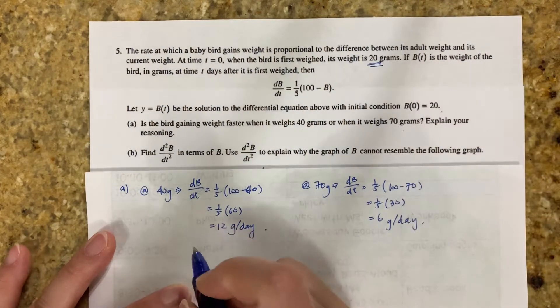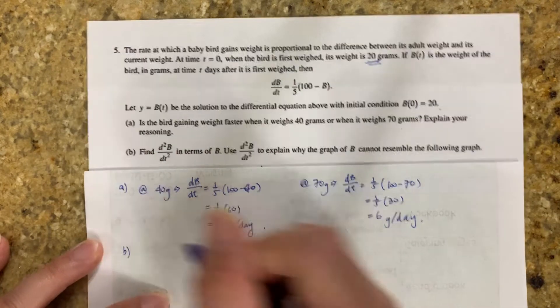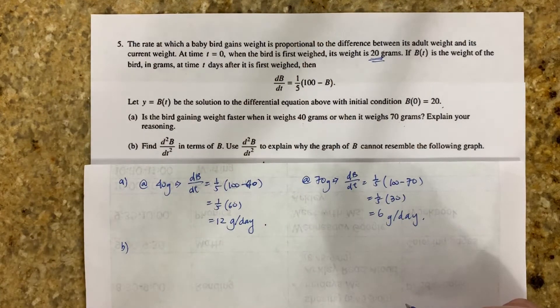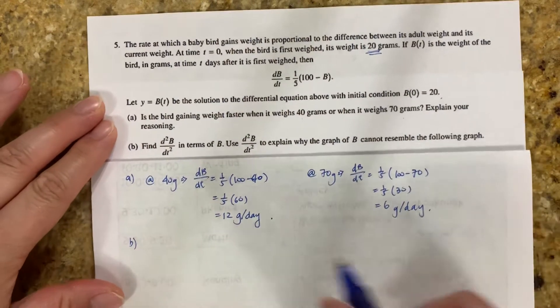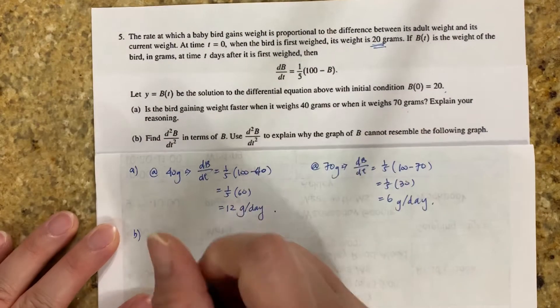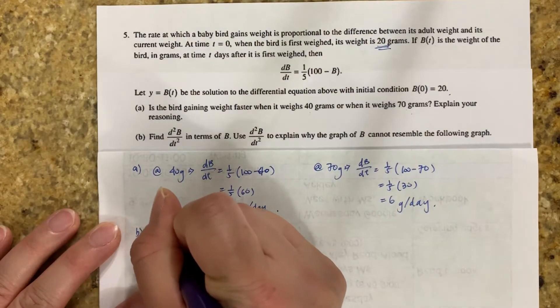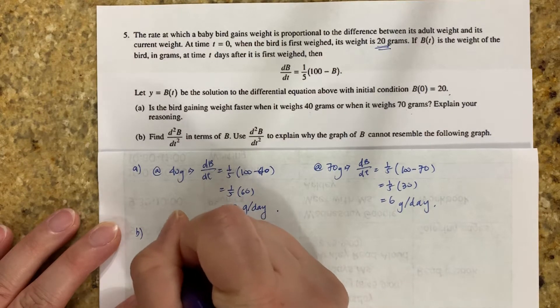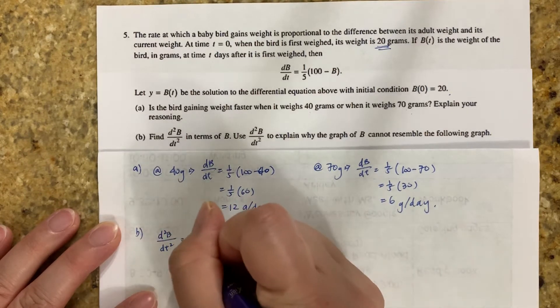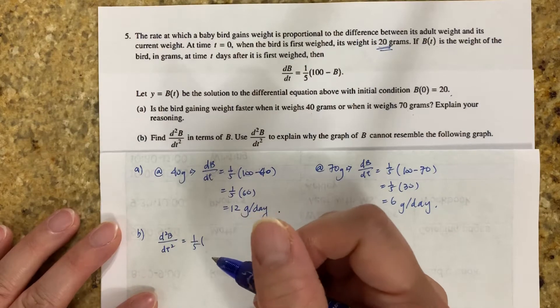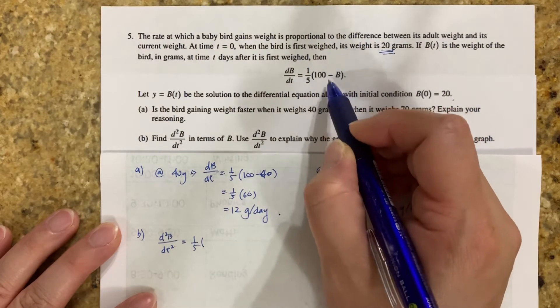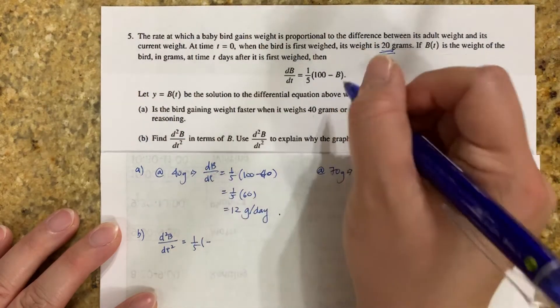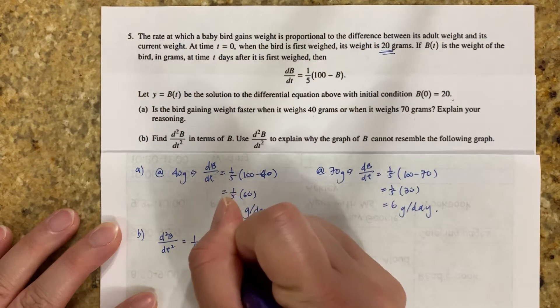Find the second derivative in terms of b. Use the second derivative to explain why the graph cannot be the following graph. Well, let's find the second derivative first. So first derivative is that. So that means d squared b over dt squared equals, well, that's your coefficient 1/5. And then 100 minus b, well, 100 is a constant, so it's gone, minus, well, the derivative of that is db over dt.